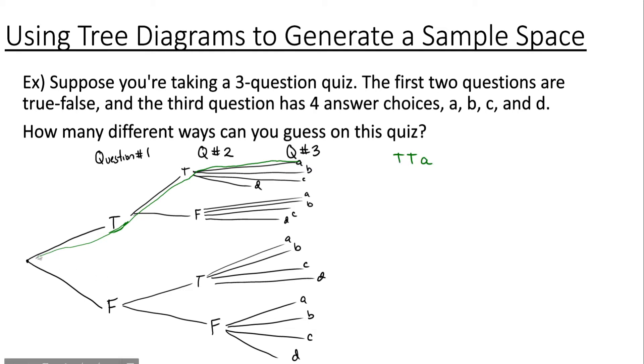If we follow the second highest branch we see we guess true, we would guess true again and then we would guess B, and we would have true, true, B as another possible guess.